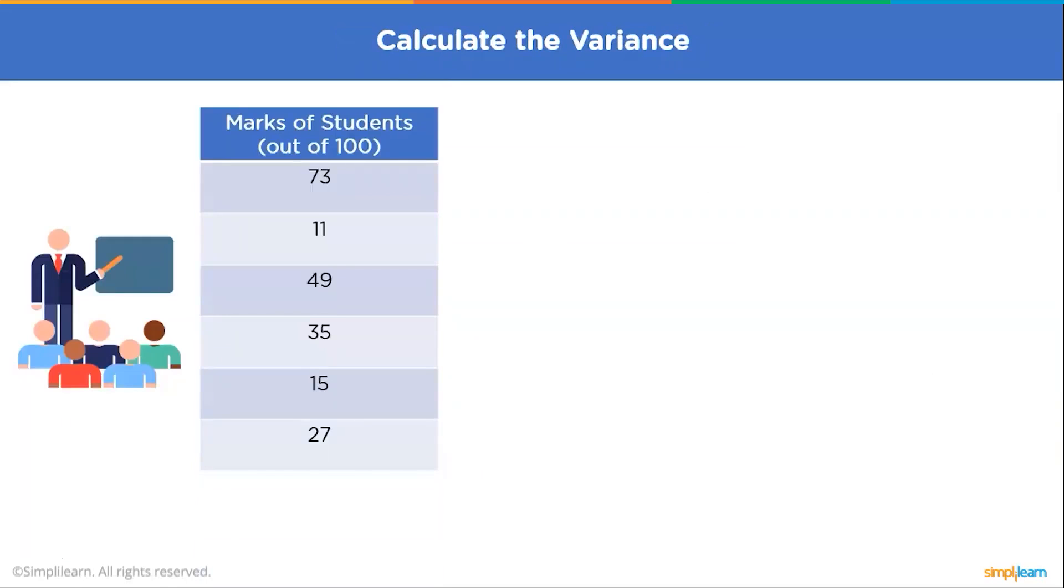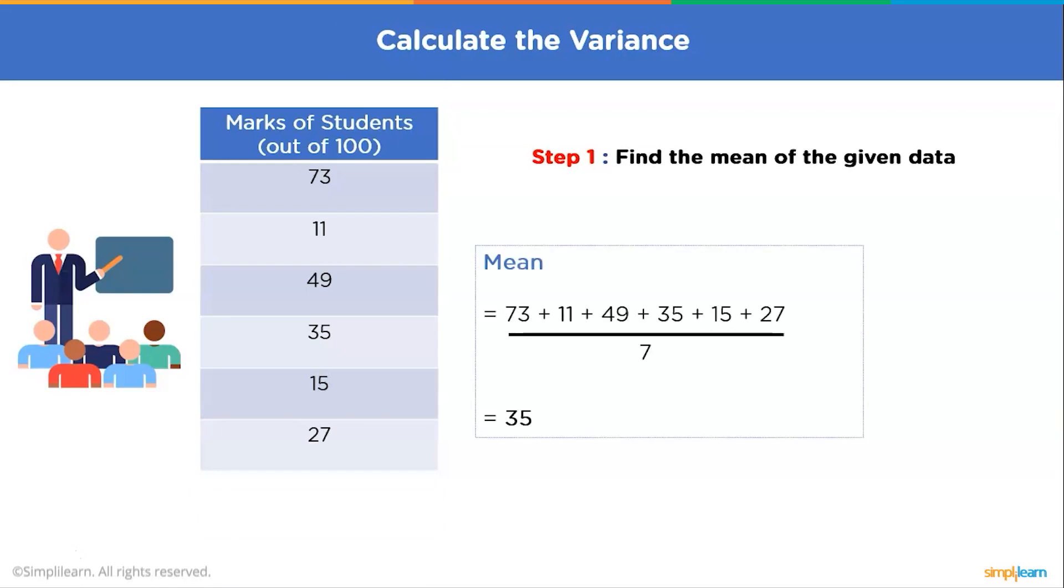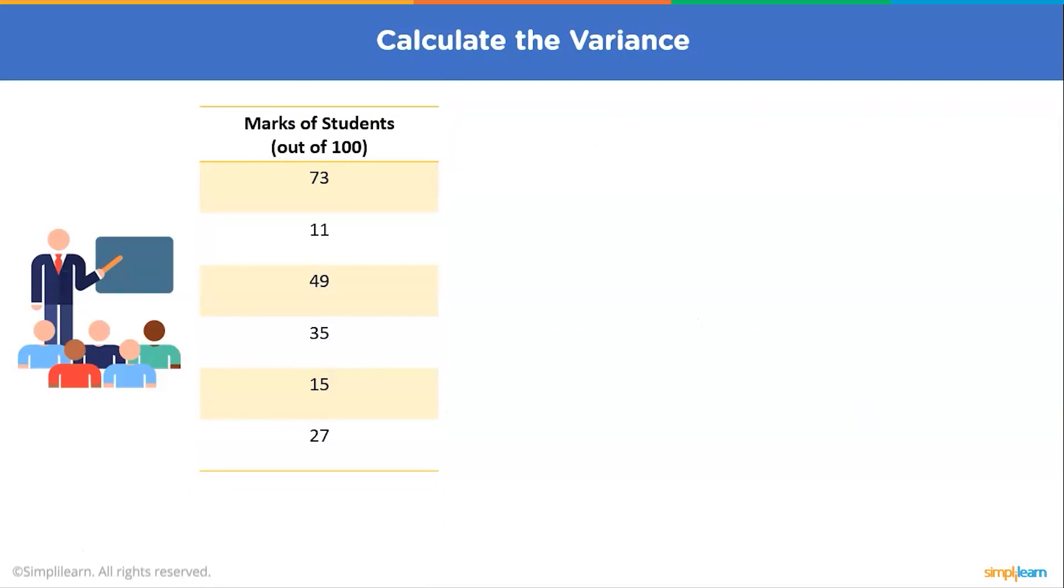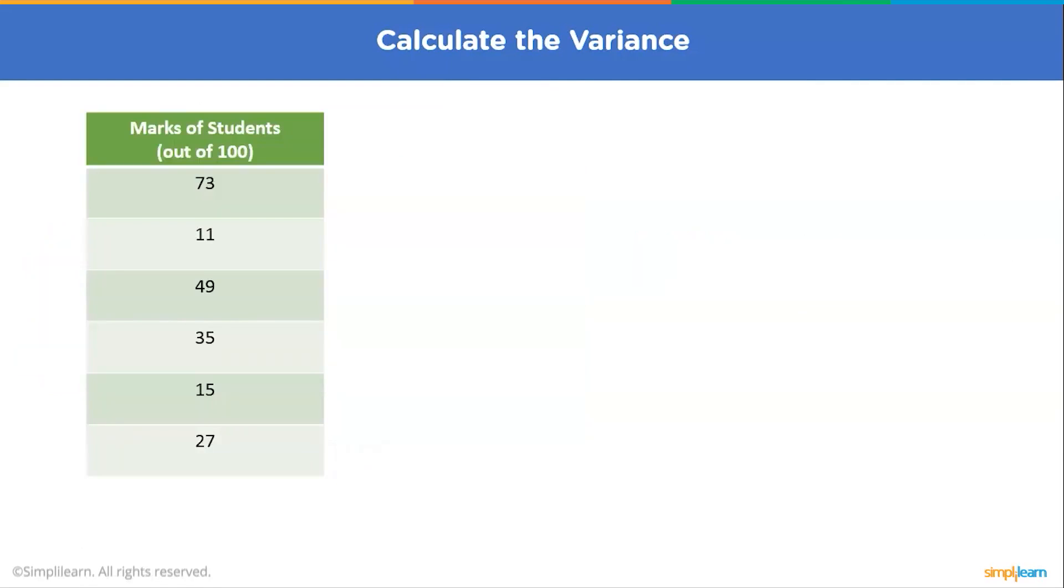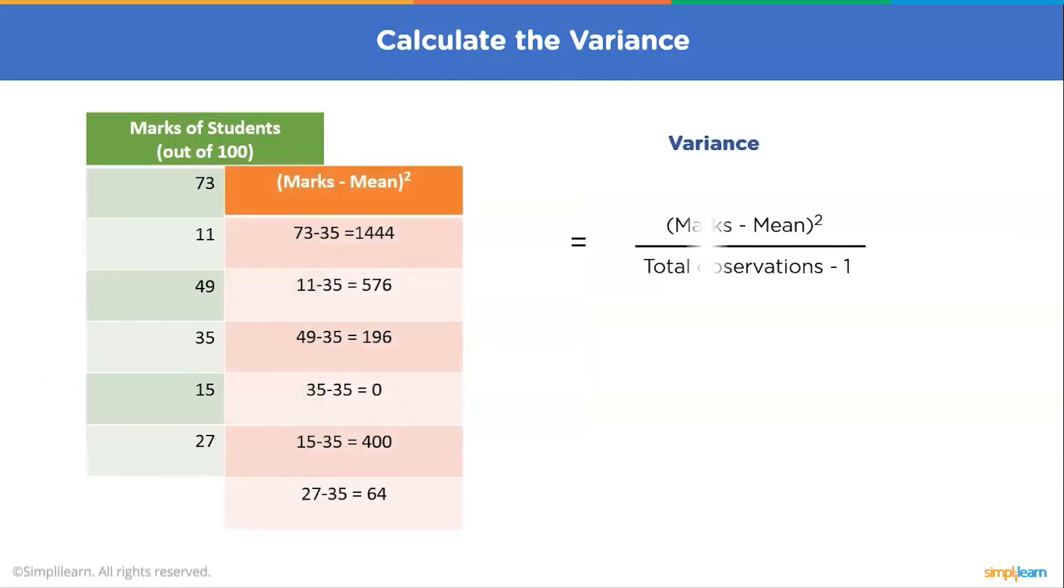So how to calculate the variance? So this is the same previous example. We have the marks of students out of 100. So the first step would be to find the mean of the given data. So as calculated before, the mean of the given data was 35. Step 2 will be to calculate the square of the difference between each score and the mean. So this is the same as the previous step where we have calculated the marks minus mean whole square. The change comes here. The variance formula is the sum of the marks minus mean whole square divided by observation minus n. So when we add all the marks minus mean whole square and divide by 5, we will get the variance as 536. Majorly, variance is used to calculate the standard deviation since it is the square root. When we calculate the square root of 536, we will get the answer as 23.5. It is the same as the standard deviation.